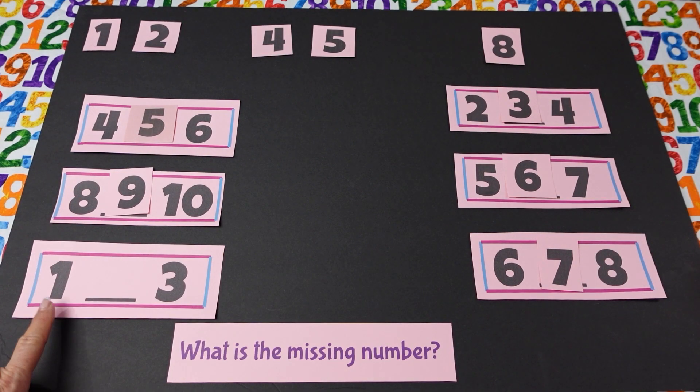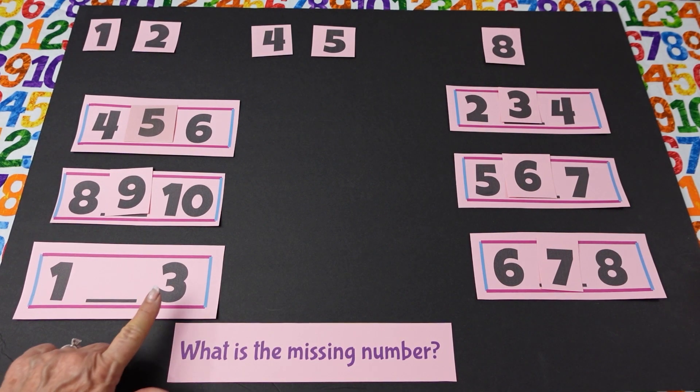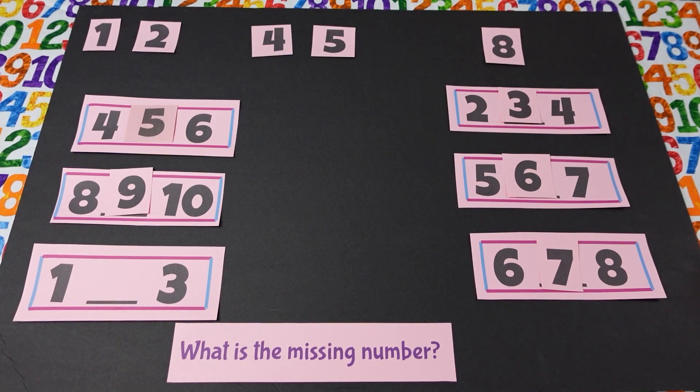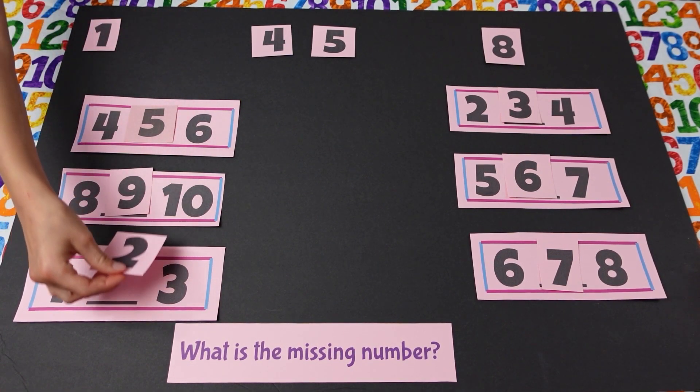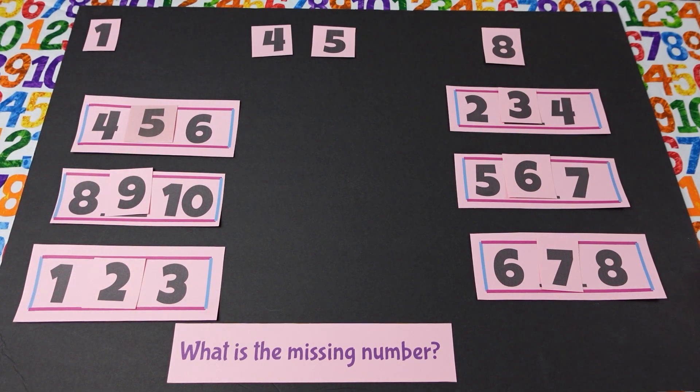Isabella, what is this number? One. And what's this number? Three. And what number goes in the middle? Two. Uh-huh. All right. Okay. Good job.